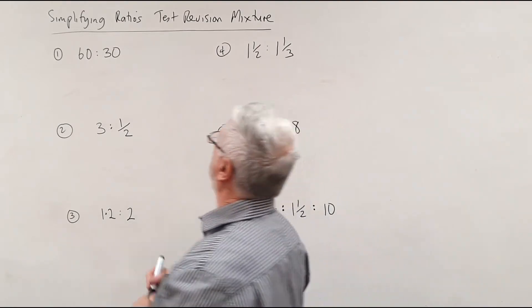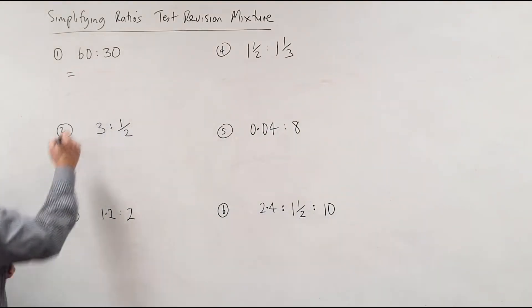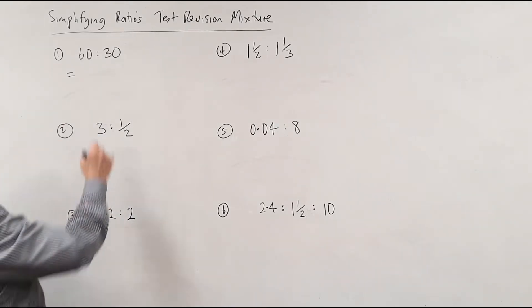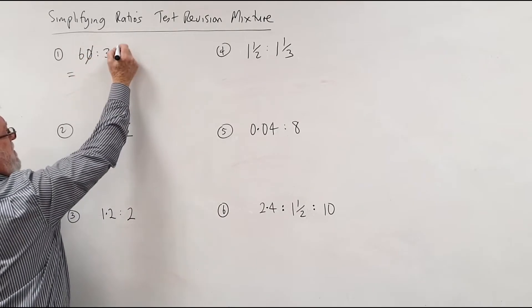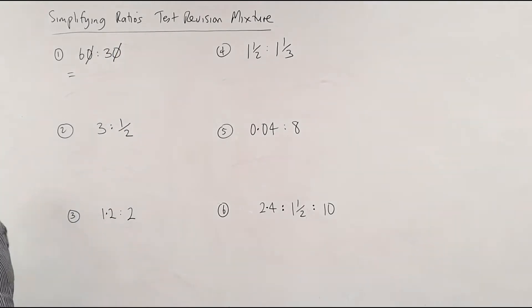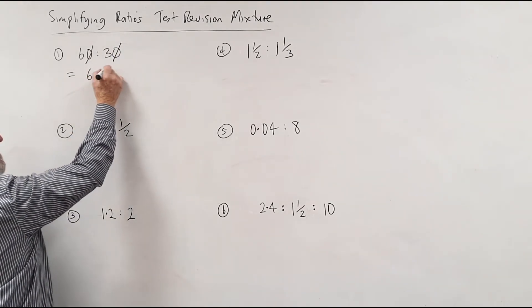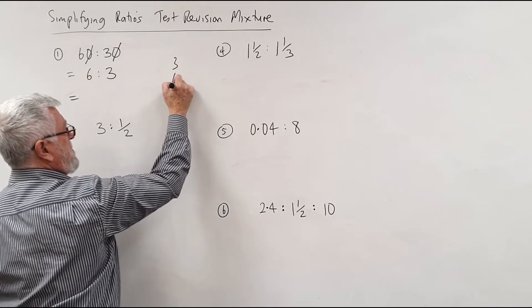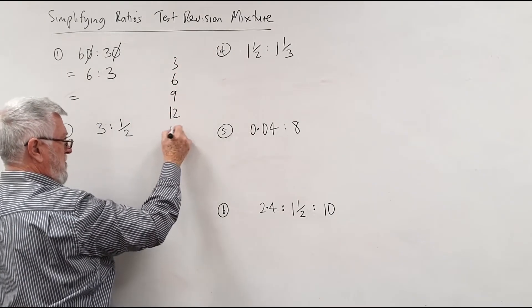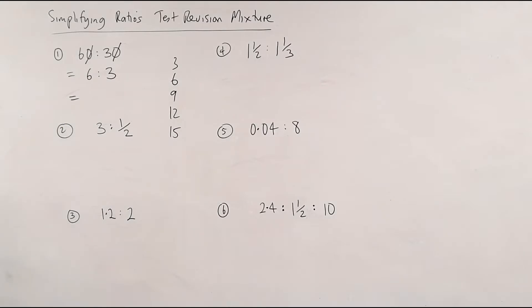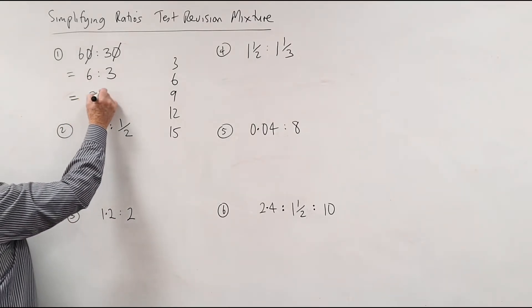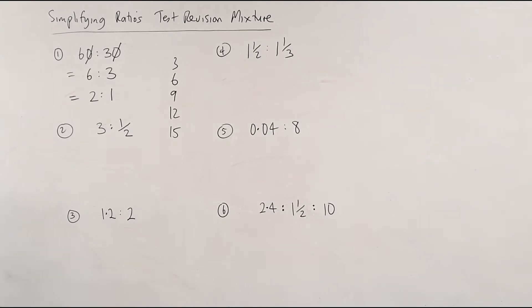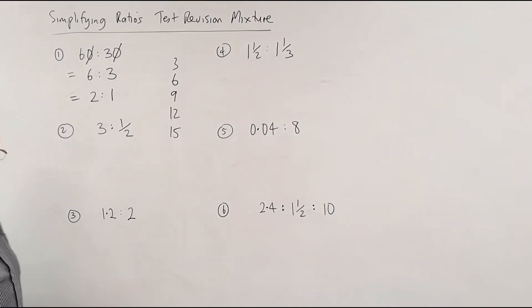Let's have a look. The first one: 60 and 30. One of the things I talk about — you can divide by 10, or if there's a zero here and a zero there, you can just cross them out and they become 6 to 3. Look at what's left: the 6 and the 3 — they're in the three times table. So 3 goes into 6 twice and into 3 once.